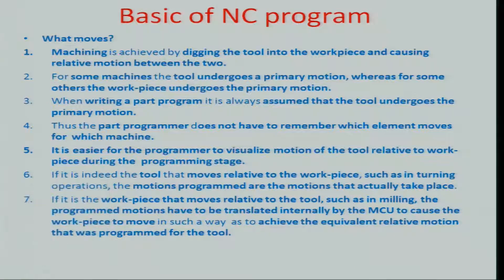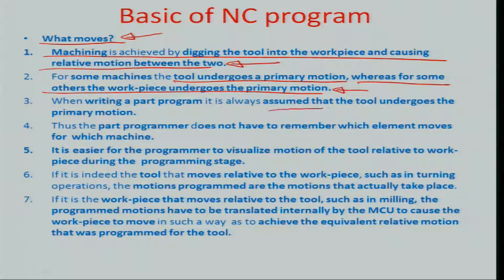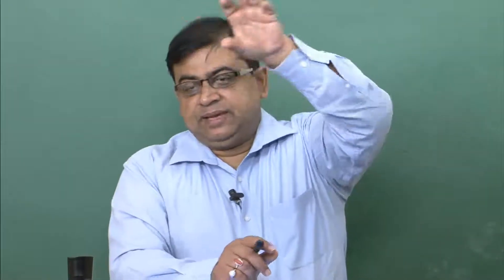One important thing is what moves in an NC system. Machining is achieved by digging the tool into the workpiece and causing relative motion between both the tool and the workpiece. For some machines the tool undergoes primary motion; for others, the workpiece does. However, it is always assumed that the tool undergoes the primary motion when writing a part program. As a part programmer, you are always sitting on the tool, and wherever the tool is tracing over the workpiece is the path you are trying to define.